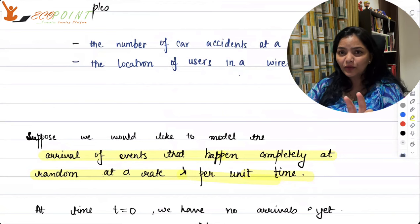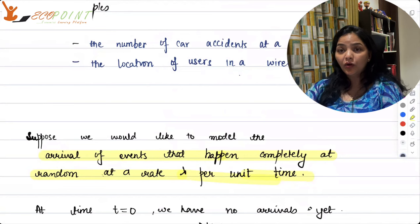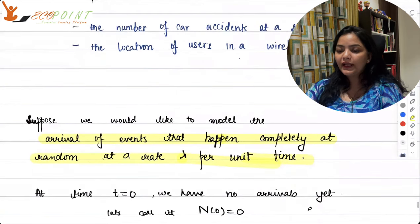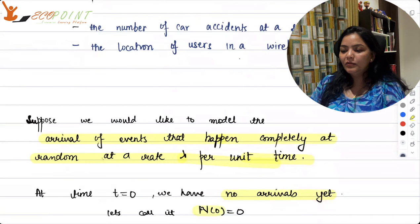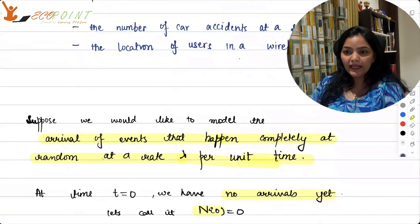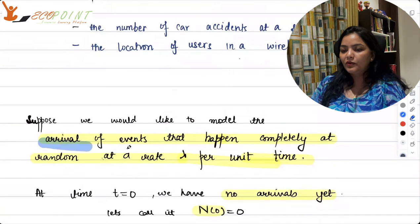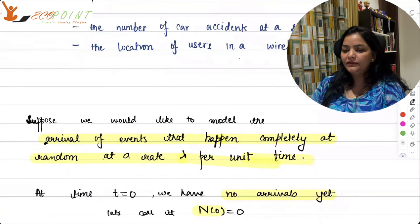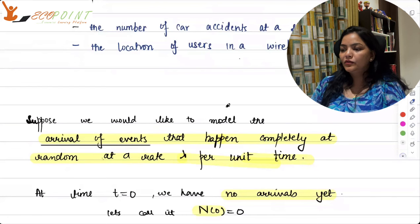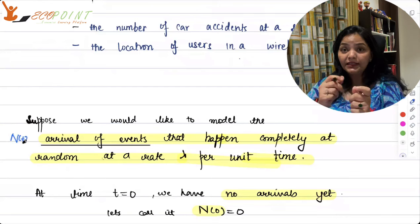So your probability or the number of occurrences, not probability here, the number of occurrences here will be zero. So at t equals to zero, we have no arrivals yet. Let's call this number nt or n, the number of events, number of arrivals. We call this number n associated to some t.